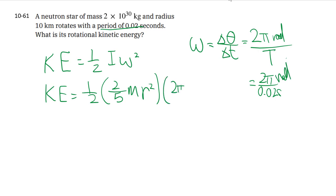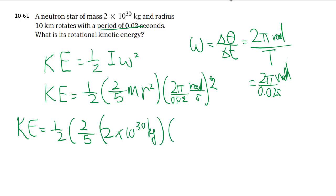So we substitute that in there, 2π over 0.02 radians per second, all squared with the actual numbers subbed in. Oh, 10 kilometers. Oh, sneaky.